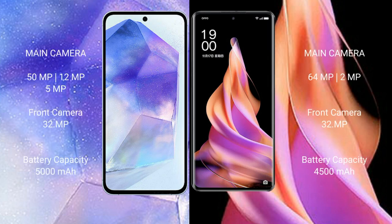Samsung Galaxy A55 has a triple camera setup: 50MPx, 12MPx, 5MPx on the rear, and 32MPx on the front. Oppo Reno 9 has a dual camera setup: 64MPx, 2MPx on the rear, and 32MPx on the front.